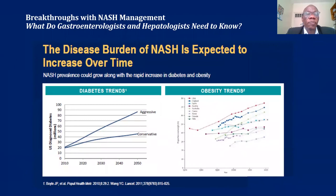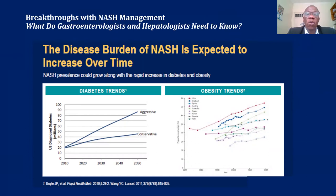Even in the developed world, there have been many studies looking at NAFLD and the trajectory of diabetes and obesity. With an aggressive trajectory, by 2050 it is anticipated that approximately 90% of the population could have NAFLD. A conservative estimate puts this at about half that figure. Obesity is also on the rise, and all these trends do not leave out Africa.